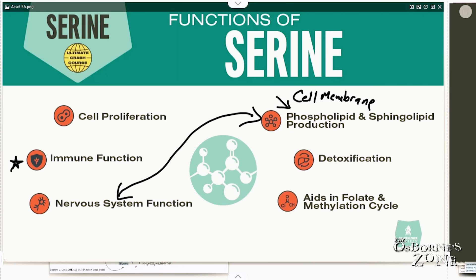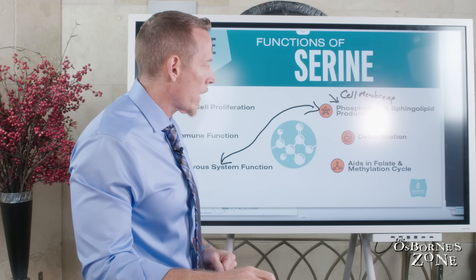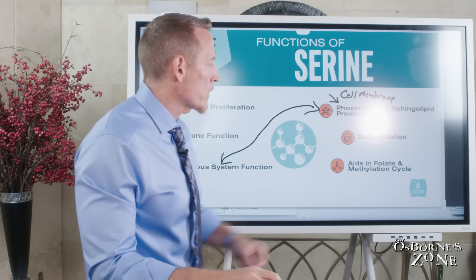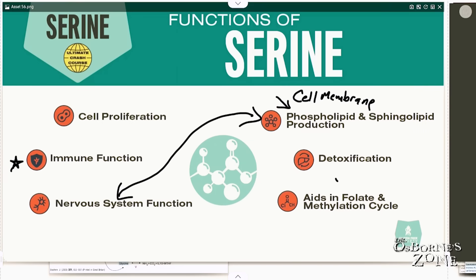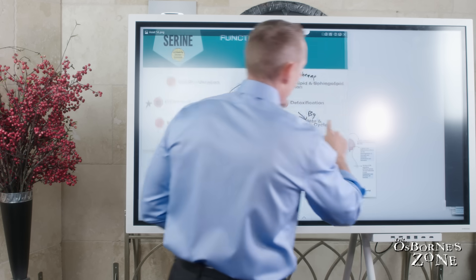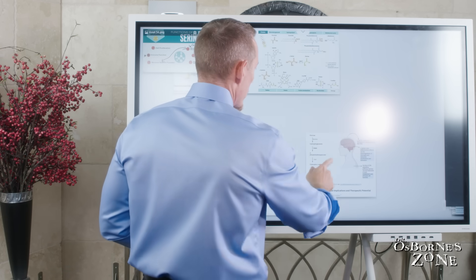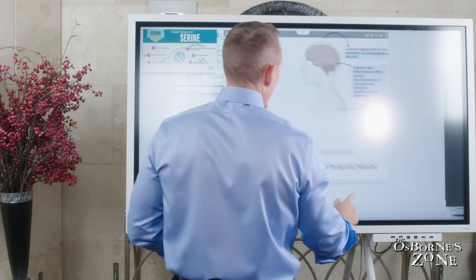We also know that serine plays a major role in detoxification through its ability to help your body produce glutathione, the master antioxidant and detoxifier, and it aids in the methylation cycle. Predominantly, it helps with folate, which is vitamin B9. These two play kind of an interconnecting role with each other.